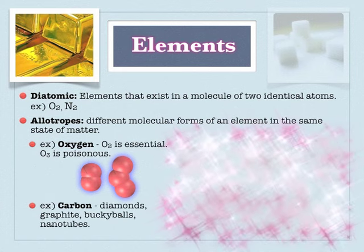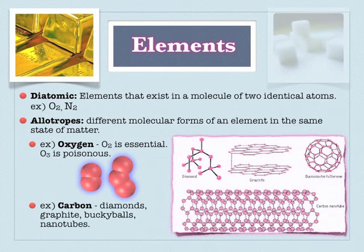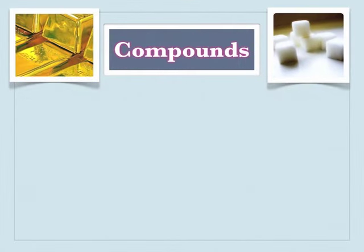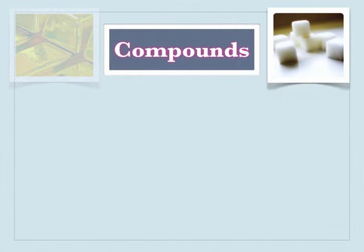Allotropes are different physical manifestations of the same element. So oxygen and ozone are both gases containing oxygen — O2 is what we breathe, while O3 is a pollutant, though ozone does protect the planet in the ozone layer. We continue to discover more allotropes of carbon — in high school we just had diamond and graphite, but now we also have the buckyball, nanotubes, and graphene.